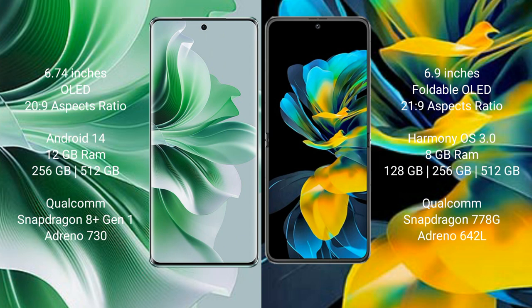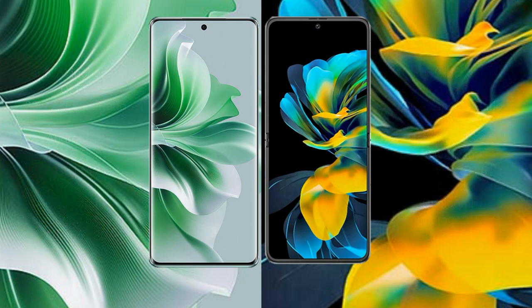OPPO Reno 11 Pro comes with 12GB RAM and 256GB or 512GB internal storage, Qualcomm Snapdragon 801 processor and GPU Nintendo 730. Wahab Pocket S comes with 8GB RAM and 120GB, 256GB, or 512GB internal storage, Qualcomm Snapdragon 770 8G processor and GPU Nintendo 642L.